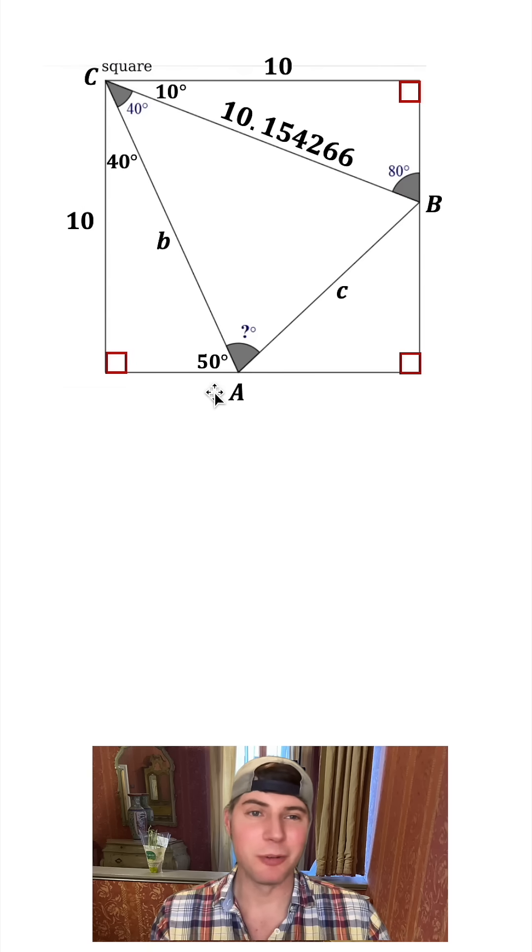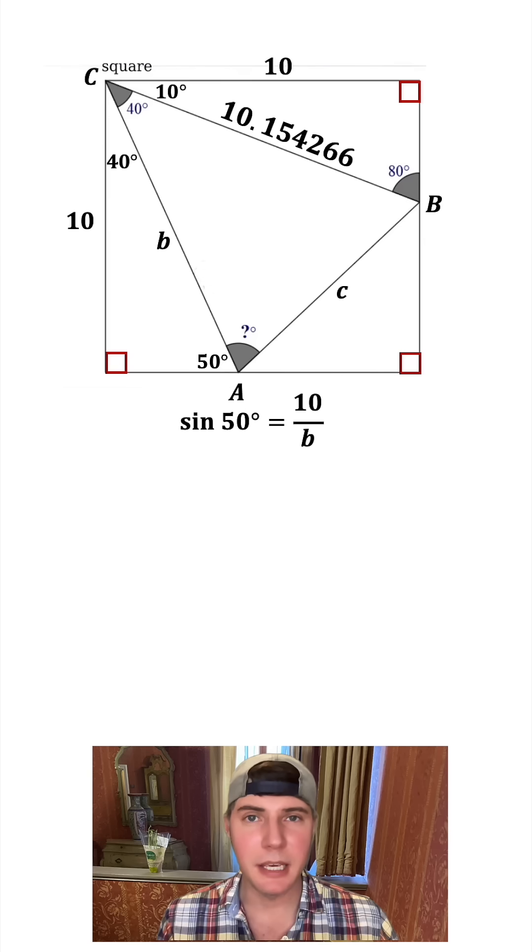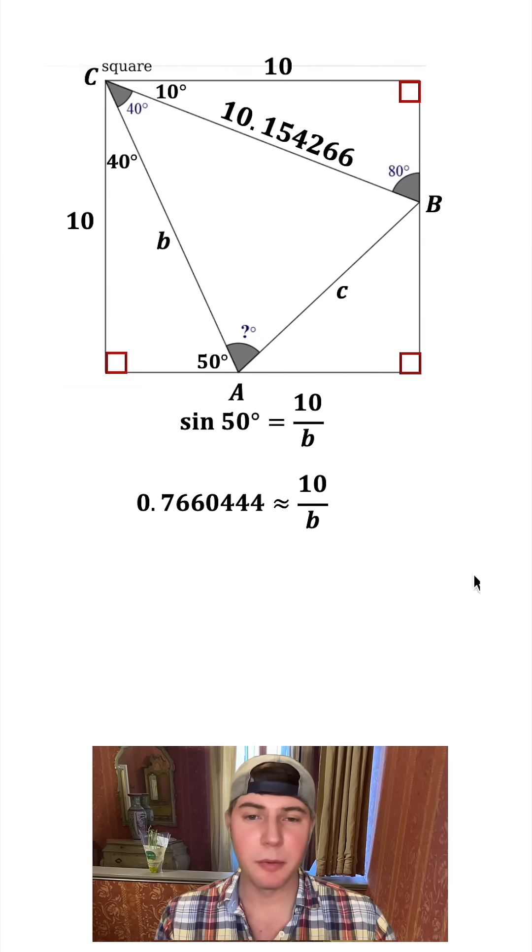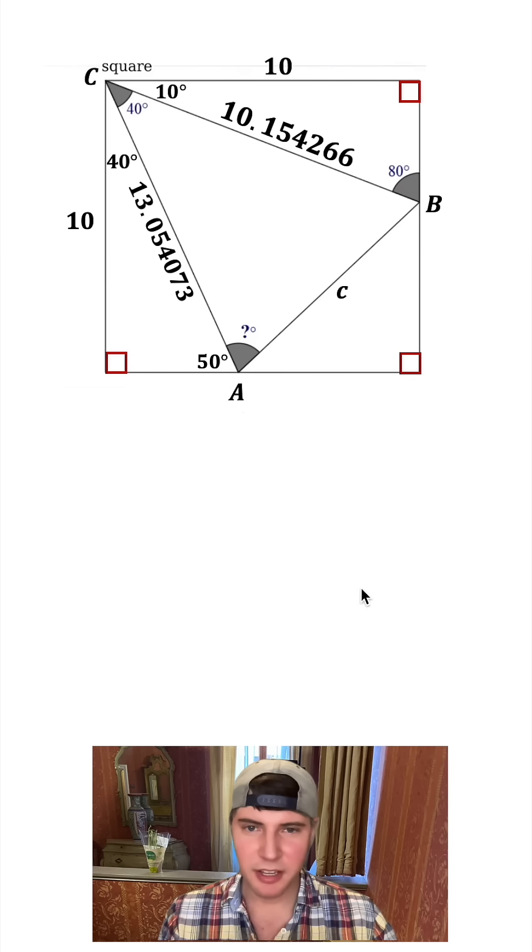So let's do sine again. We'll do sine of 50. It's equal to a ratio of the opposite 10 divided by the hypotenuse B. Sine of 50 is this decimal right here. Multiply both sides by B, divide by the decimal. And we get a value for B. It's approximately 13.05. Let's get rid of this stuff.